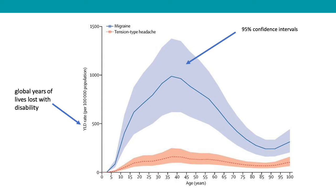Although migraines and tension-type headaches are common particularly in younger people, they do have a significant level of associated disability. Looking at global years of lives lost with disability — counting days off work and lost productivity — these conditions cost billions of pounds in economic terms. The good news for us as acute physicians is that about 90 percent of headaches fall into a number of categories.